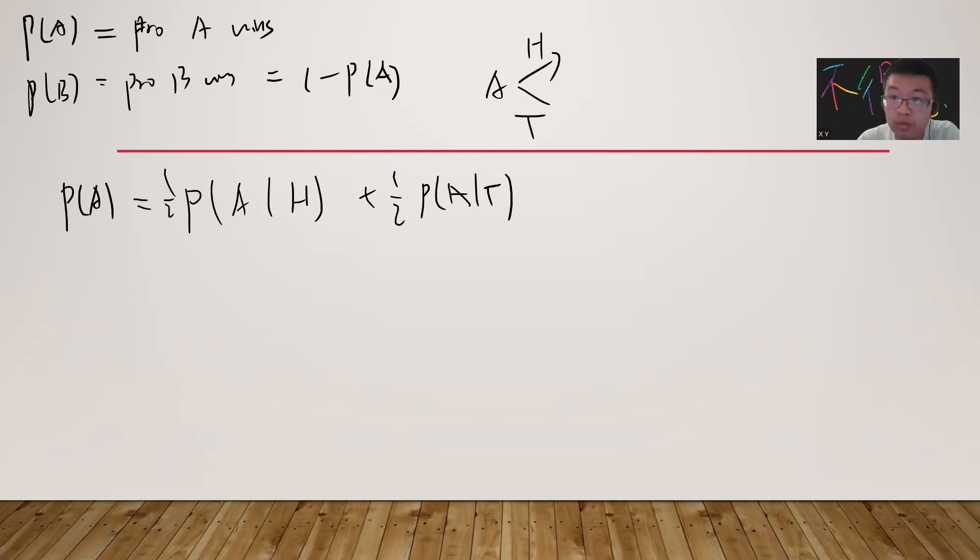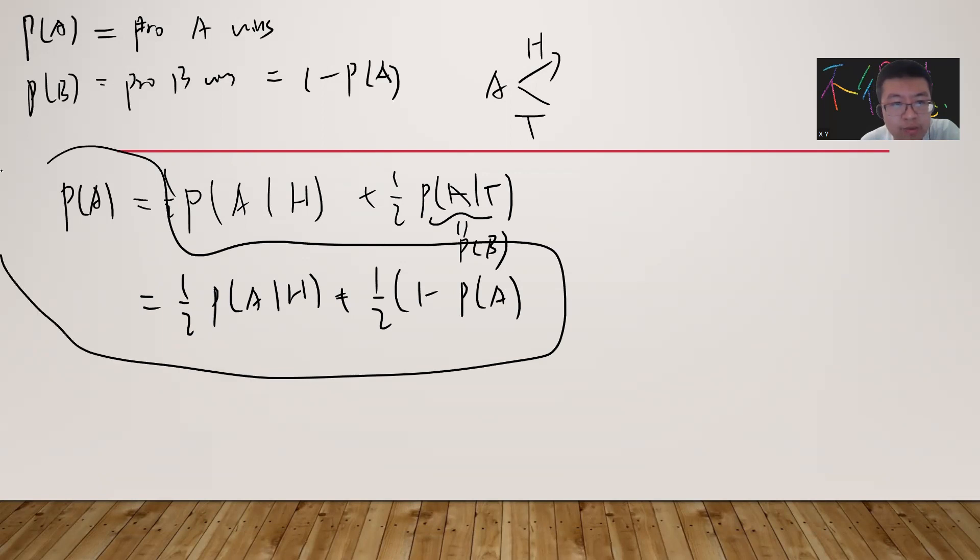This actually is P(B) because B goes first. So it's the probability B wins. So it's half P(A|H) plus half P(B), which is one minus P(A). This is the first equation that we have.